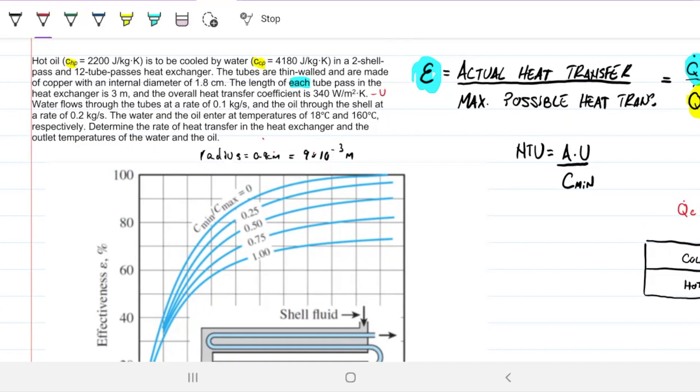So the overall heat transfer coefficient is 340, and water flows through the tubes at a rate of 0.1, and the oil through the shell at a rate of 0.2. The water and oil enter at temperatures of 18 and 160 respectively.